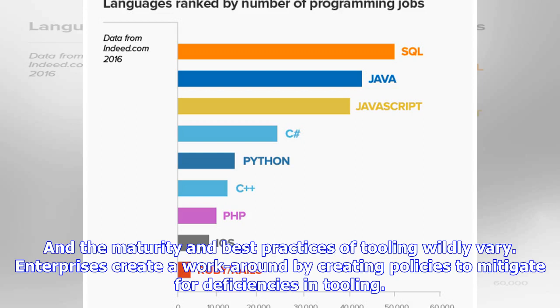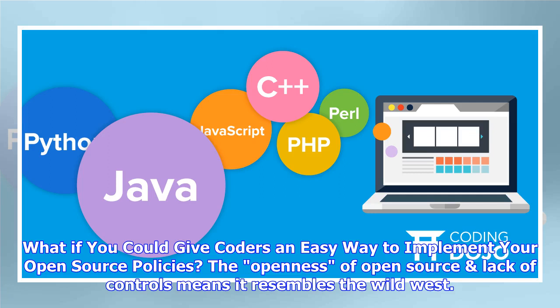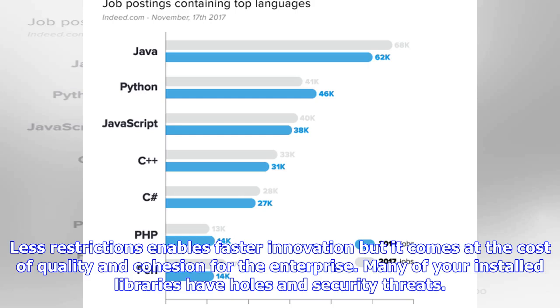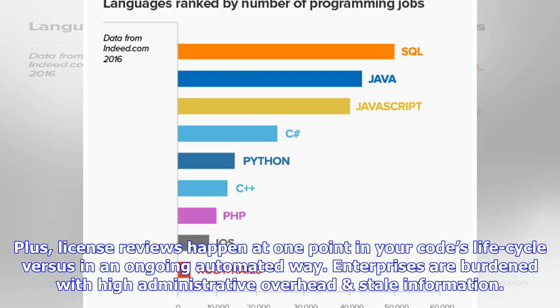Enterprises create a workaround by creating policies to mitigate for deficiencies in tooling. This workaround is subpar because it happens too late in the SDLC after threats and issues are introduced into your code. What if you could give coders an easy way to implement your open source policies? Less restrictions enables faster innovation but it comes at the cost of quality and cohesion for the enterprise. Many of your installed libraries have holes in security threats. Enterprises are faced with time-consuming license reviews to ensure adherence to third-party license rules, and license reviews happen at one point in your code's lifecycle versus in an ongoing automated way. Enterprises are burdened with high administrative overhead.